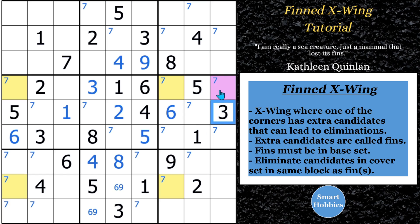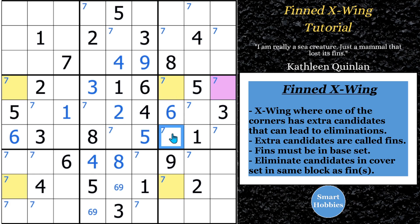Here's how it works. You look at the fin and go: either this fin is true — so this is a 7 — or it's false. If it's not a 7, you have an X-Wing. If it is a 7, that's the other case. So that's the logic for Finned X-Wing. In either case — whether this is true or not true — any 7 within this block that's in the cover set of the X-Wing can be eliminated. So this 7 right here can be eliminated; this could never be a 7.